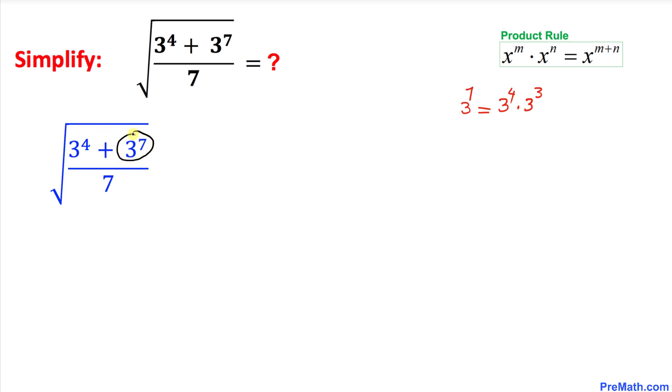Let's revert back to our original problem. Over here I can replace 3 power 7 by this quantity. I can write the radical of, on the numerator it is 3 power 4, and then 3 power 7 could be written as 3 power 4 times 3 power 3 divided by 7.